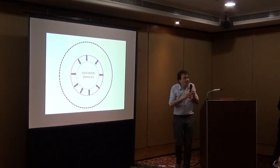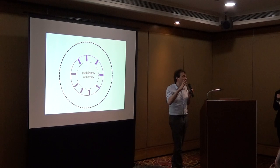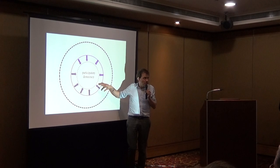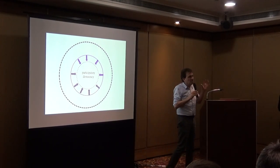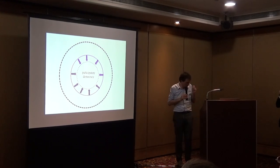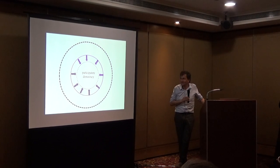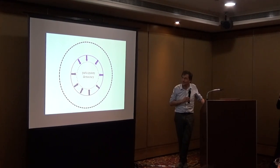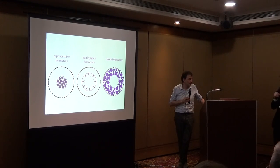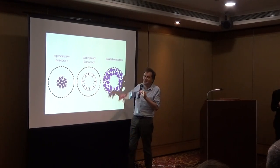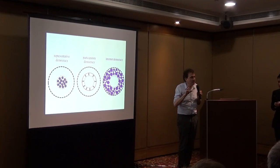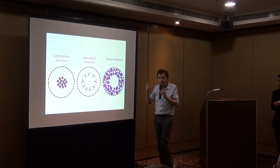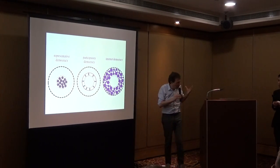And the third one is the idea to articulate representative democracy and internet democracy to have a kind of participatory democracy, where connected people could discuss, propose information, and participate in the decision process of representative democracy. It's really interesting to see how digital tools could help different forms of democracy. I will try to give three examples of open data or civic tech movements linked to those three different forms.